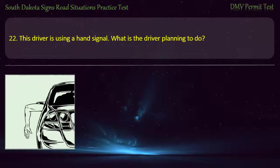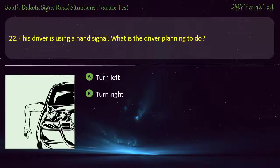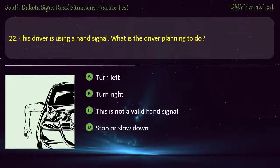Question 22: This driver is using a hand signal. What is the driver planning to do? Options: Turn left; Turn right; This is not a valid hand signal; Stop or slow down. Answer: Stop or slow down.